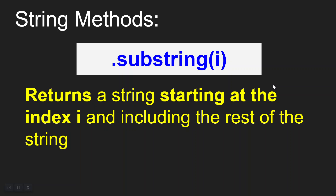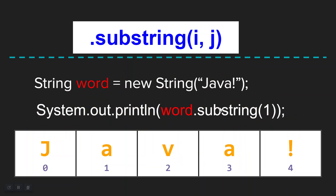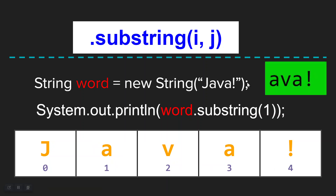There's another version of the substring method where you call it with only a single integer argument. What this does is return a substring starting at index i, and then it automatically includes everything else. So if you call word.substring(1) with one argument, it's going to start at index one and grab the rest of the string - you would end up with 'ava!' with the exclamation point.